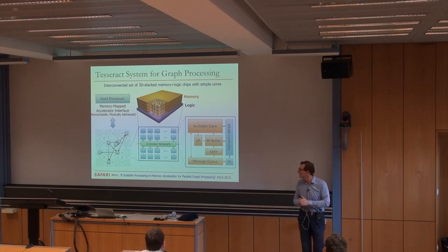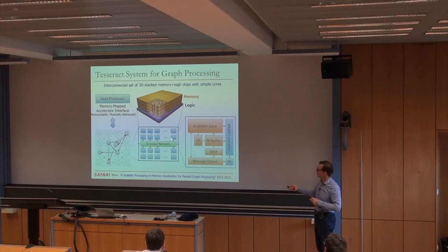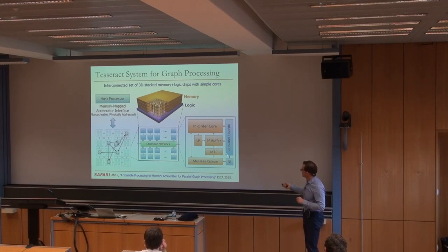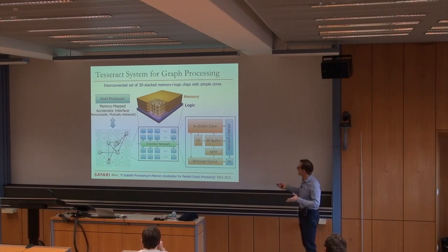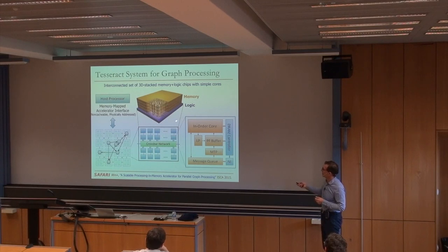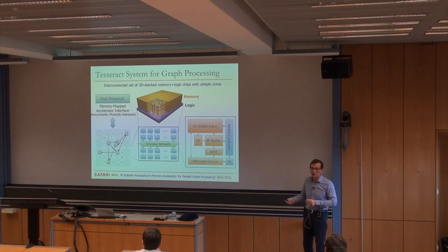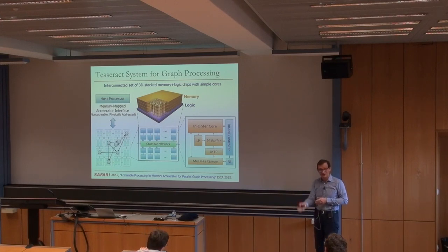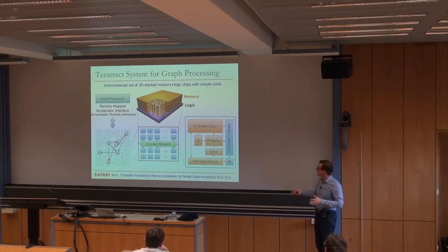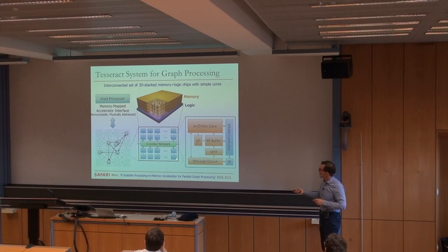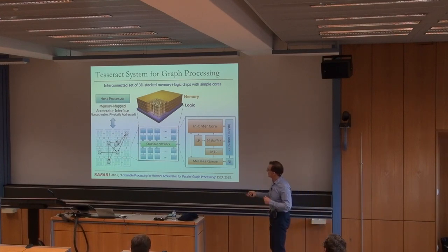Normally you have a DRAM controller inside a vault, but we're adding a simple in-order core. This in-order core is used for graph processing. You cannot make this core extremely power-hungry because of thermal constraints, so it needs to be relatively limited. We could have added accelerators but didn't in this work. With many in-order cores controlling the memory above them and interconnected with each other, we can now partition the graph inside the memory across these vaults.